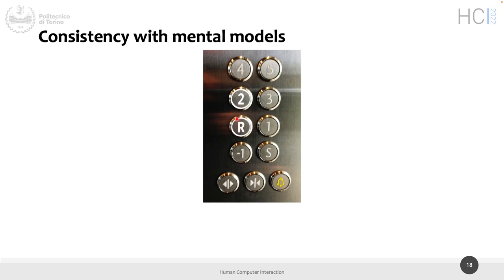Let's start from the top. If you press five, what do you expect to happen? This is an elevator — go to the fifth floor. Four, same. Three, same. Two, one... and then 'R' — the reception, maybe. Then 'S,' and minus one, because S could be under the floor. So minus one, and then minus one again?